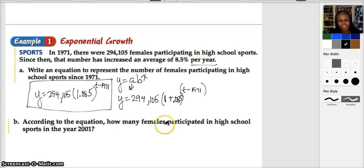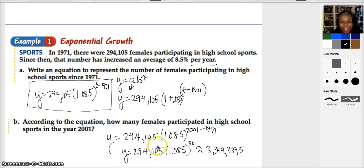Okay. According to the equation, how many females participated in high school sports in the year 2001? So I would take that same equation and simply substitute in the year 2001 for T, and then I would be calculating the difference between that and 1971. And that's not too bad, that's 30 years. So then I would plug that into my calculator. I literally plugged this information in, and when I plugged that information in, I got 3,399,339.5 approximately.